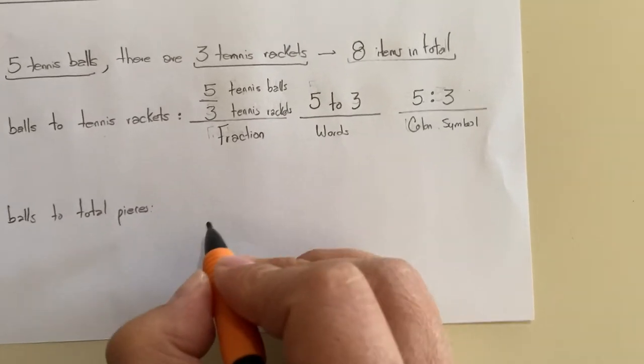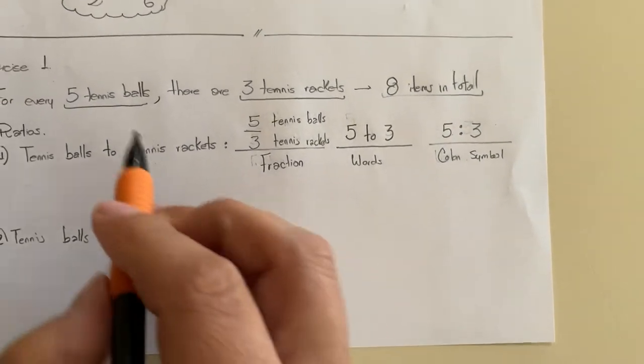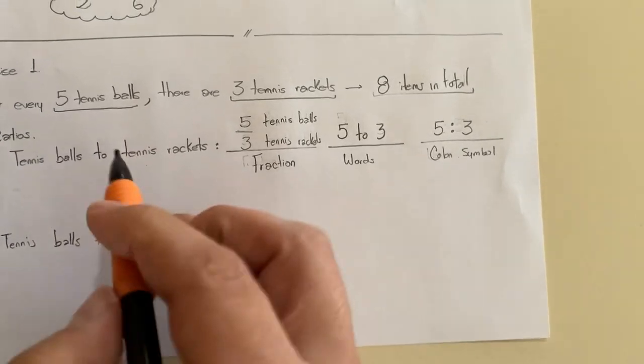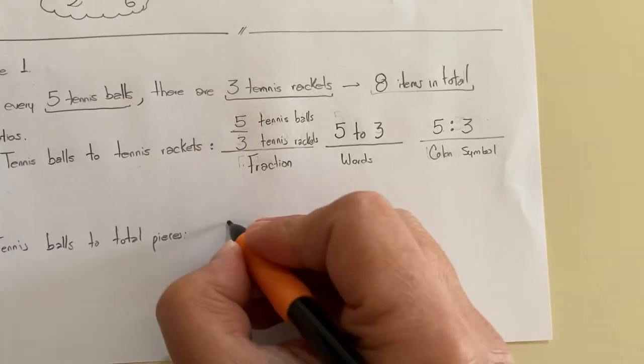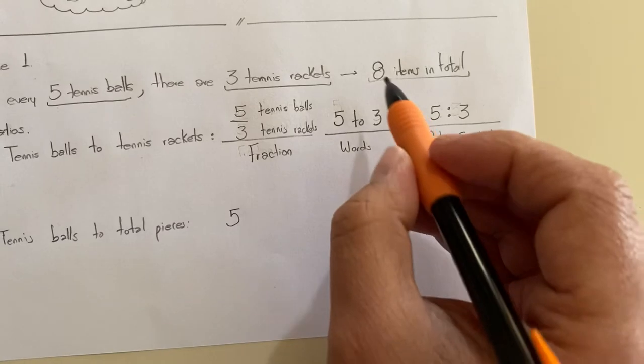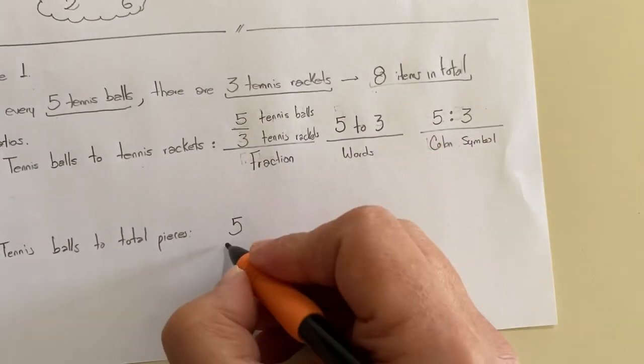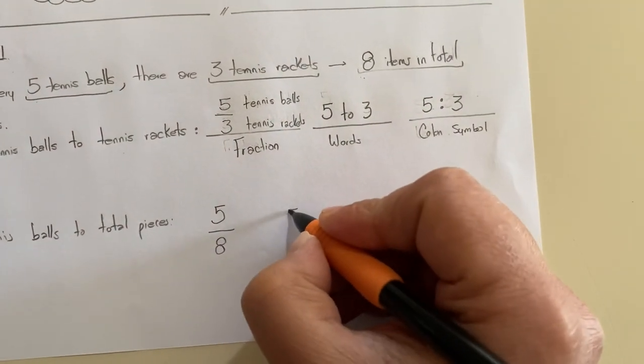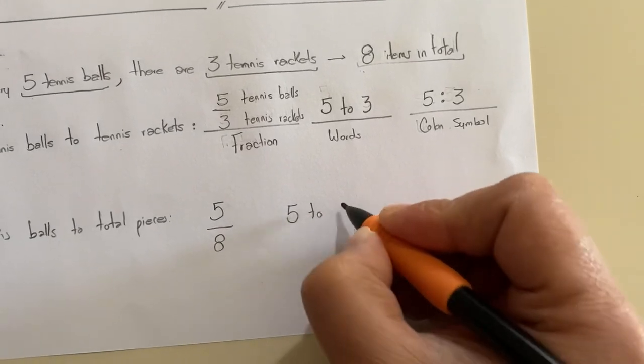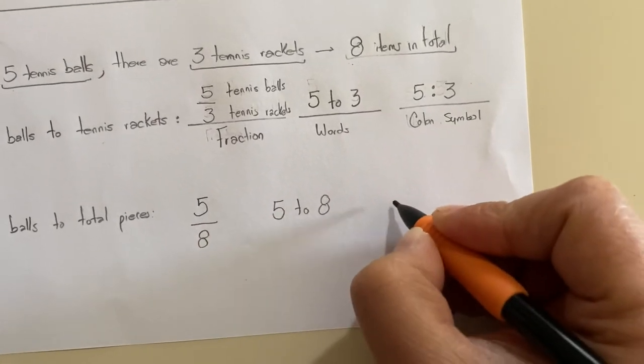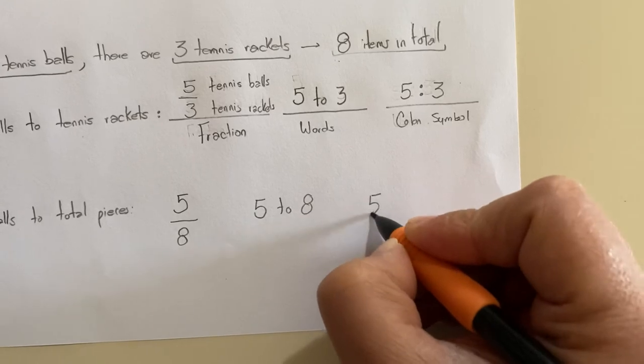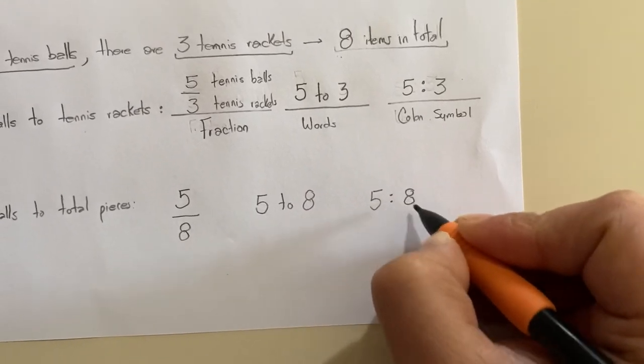So you can write, again, as a fraction - excuse me, five tennis balls to eight, or you can write in words, five to eight, or you can use the colon symbol, five colon eight.